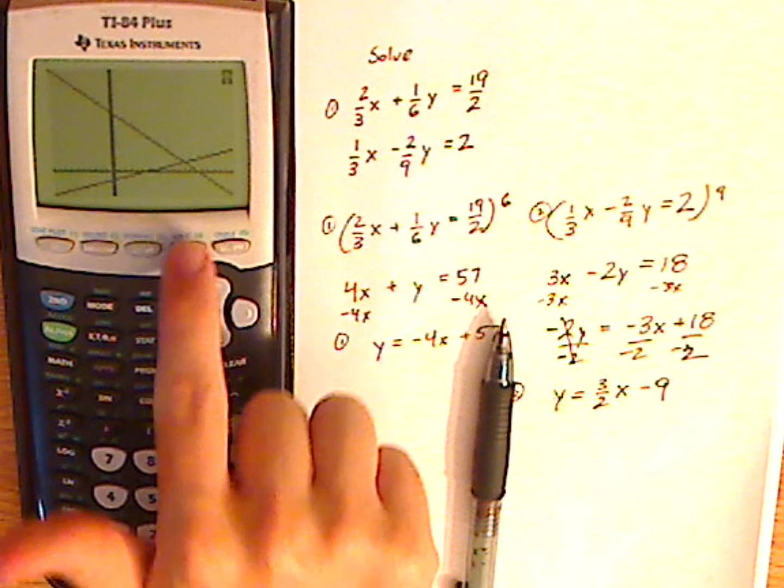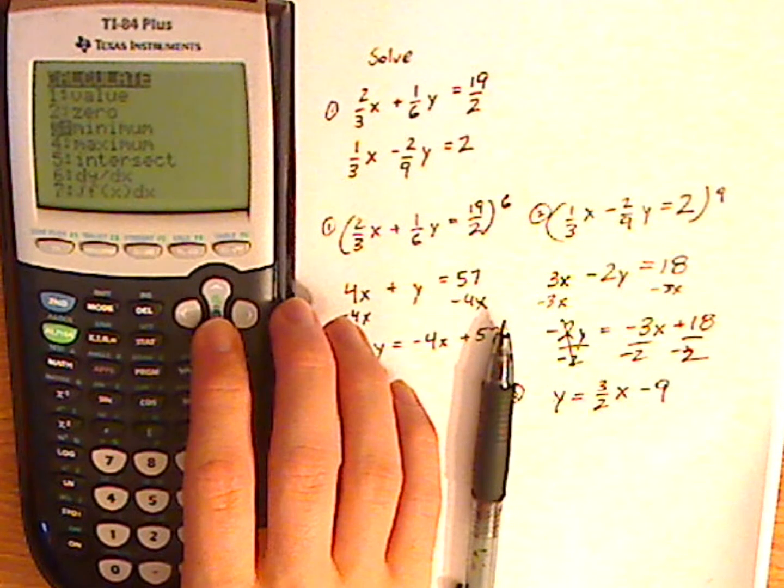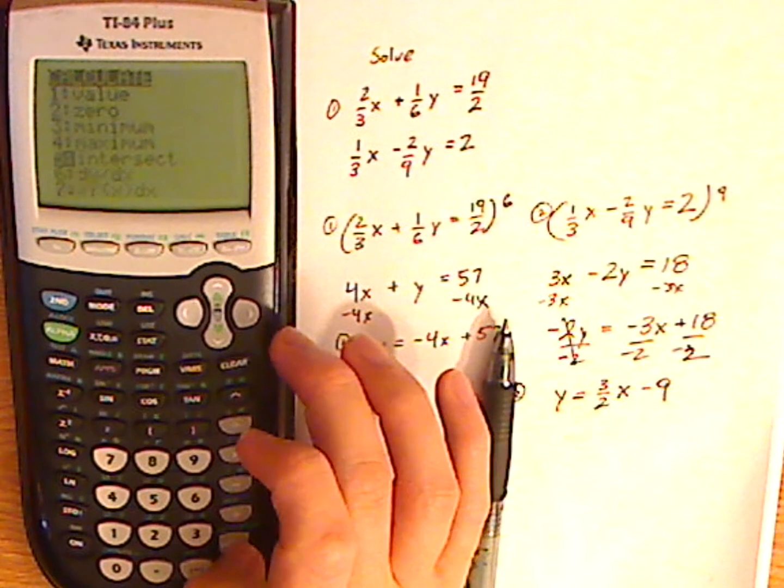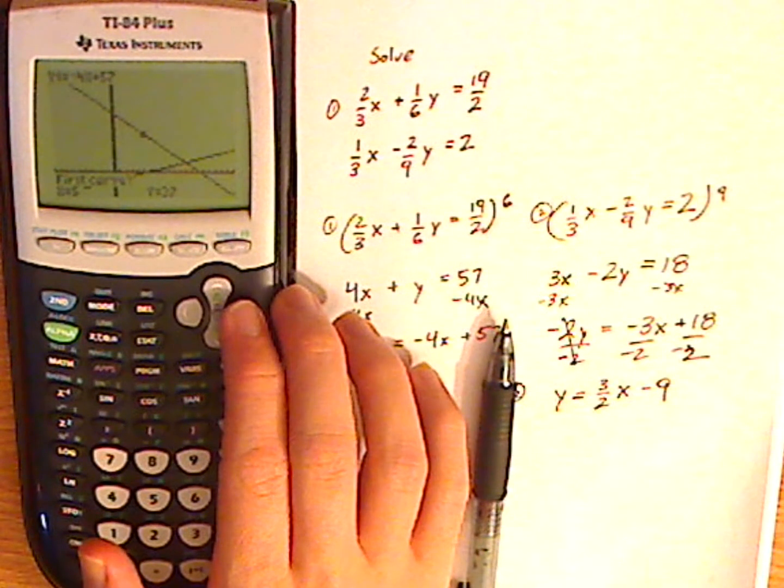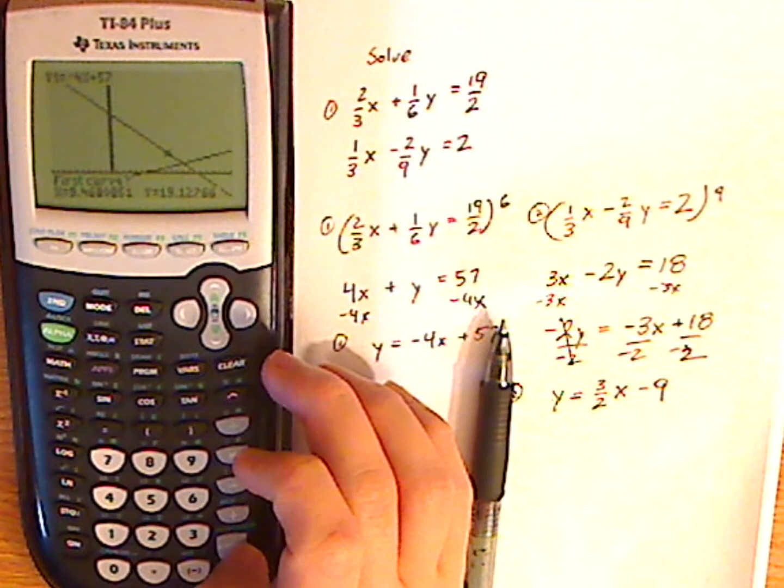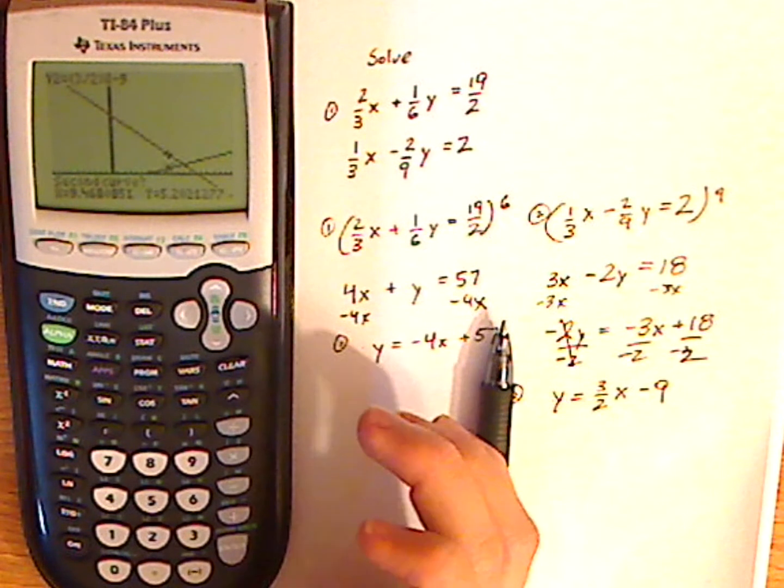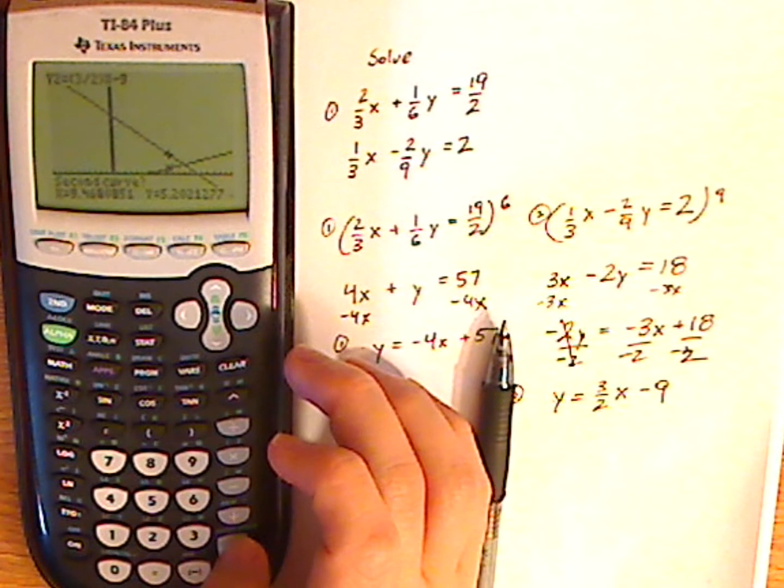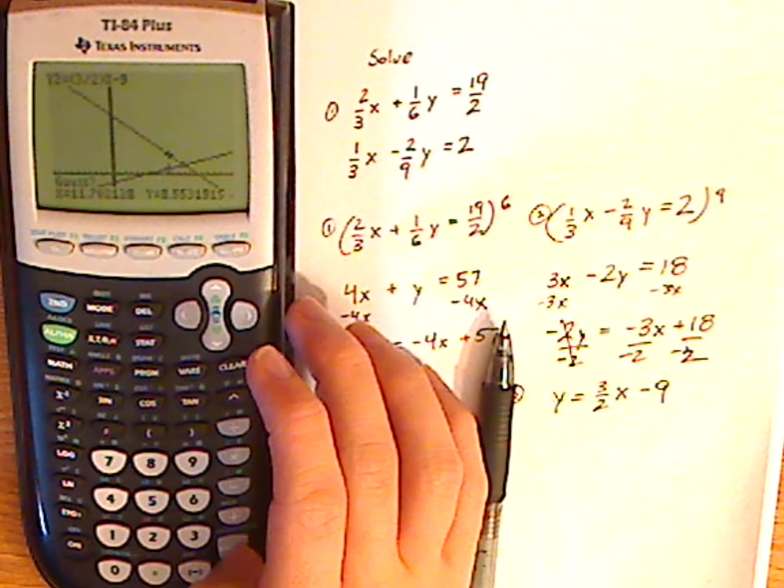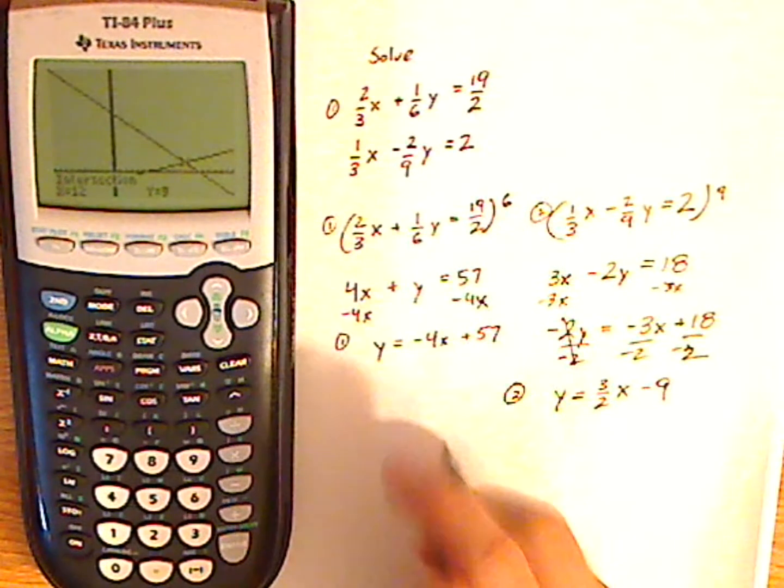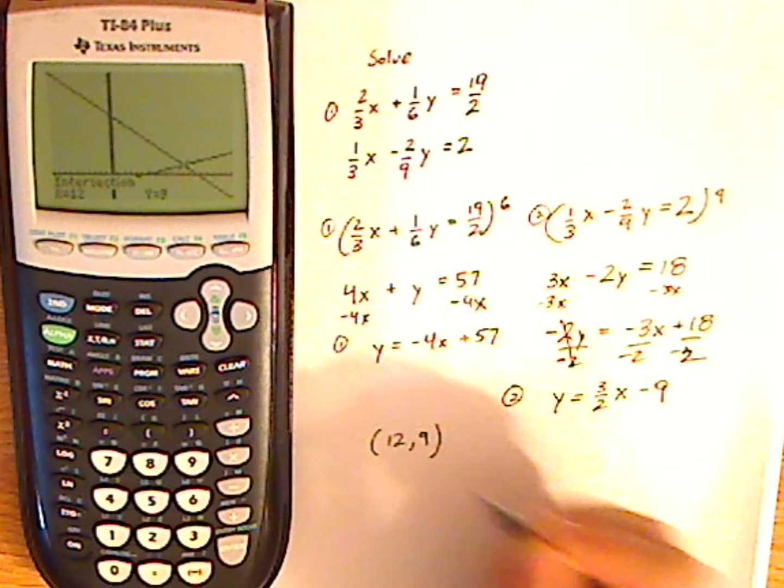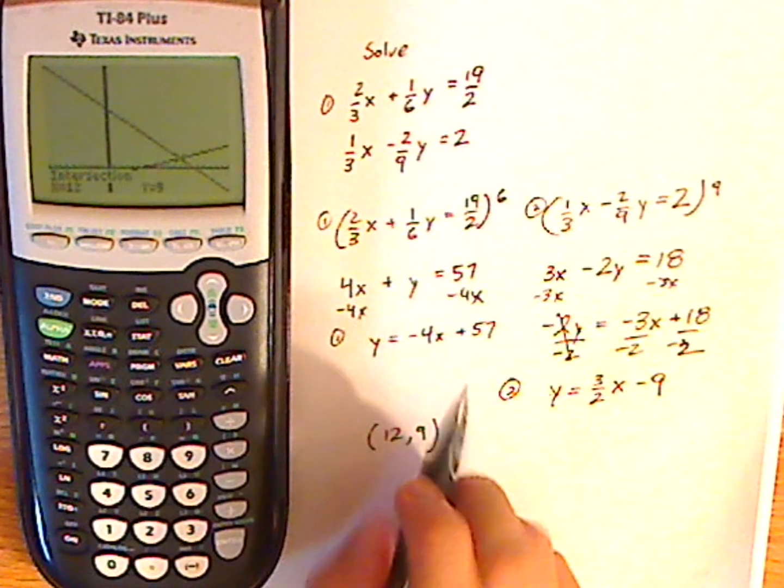Then push second, calc. Now you're looking for the solution, which is the intersection. So select number 5 for intersect. Now if there's more than one point, you want to get close to the point, but here it doesn't really matter. So enter once for first curve, enter second time for second curve, and then guess, just get it kind of close. So my solution here is (12, 9). And that's it.